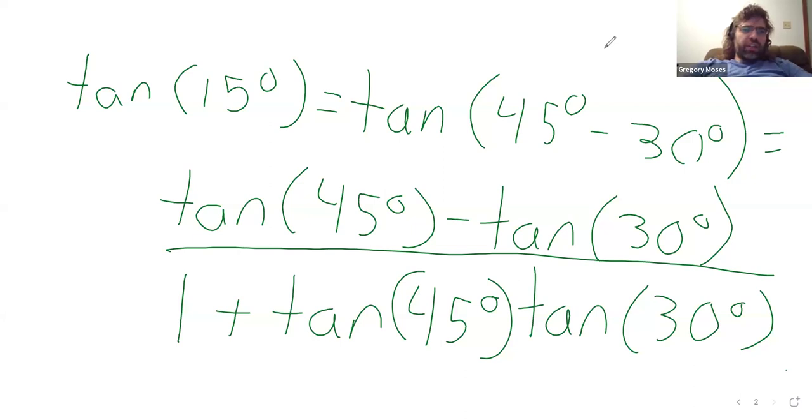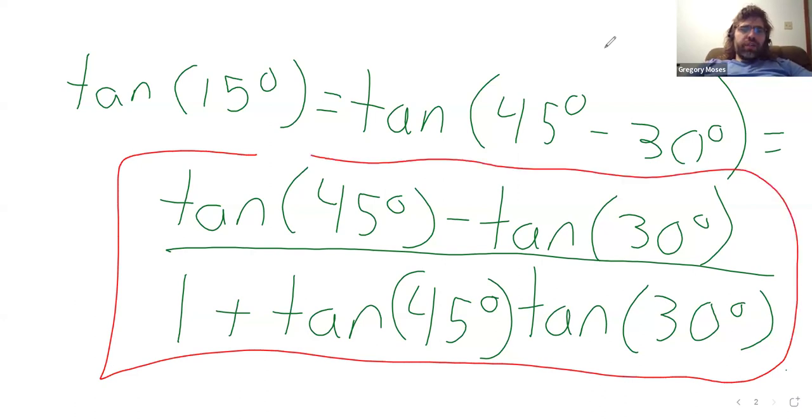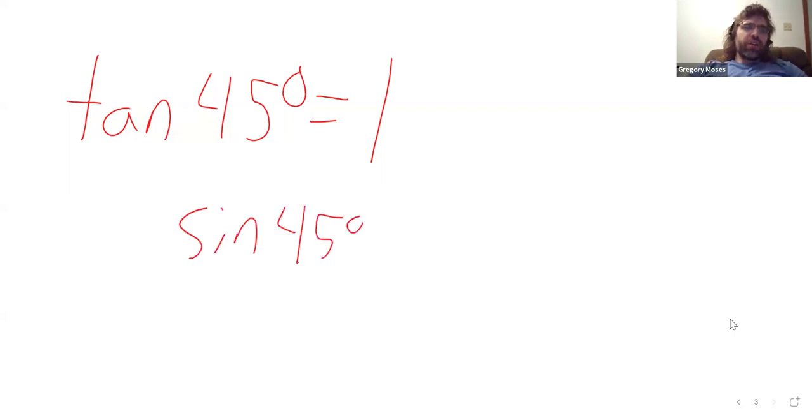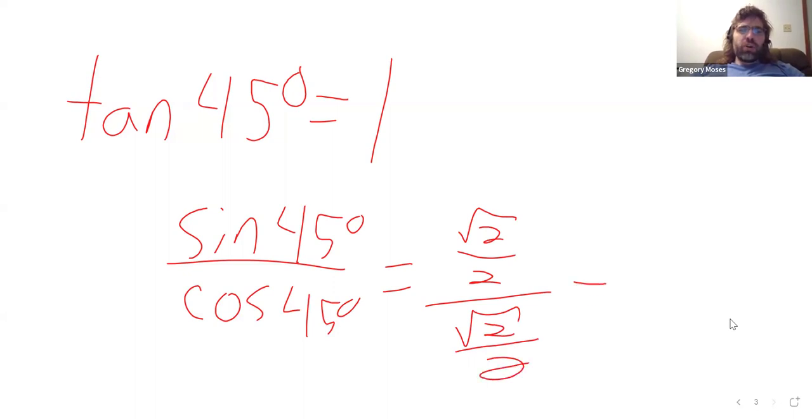So, unlike the sine and the cosine, I never suggested that you memorize the tangent of 45 degrees or the tangent of 30 degrees. So, before we do anything else, the tangent of 45 degrees is a tangent you actually might end up memorizing because it's so nice. The tangent of 45 degrees is 1 because it's the sine of 45 over the cosine of 45. And the sine and the cosine are identical. So, any number divided by itself is 1.